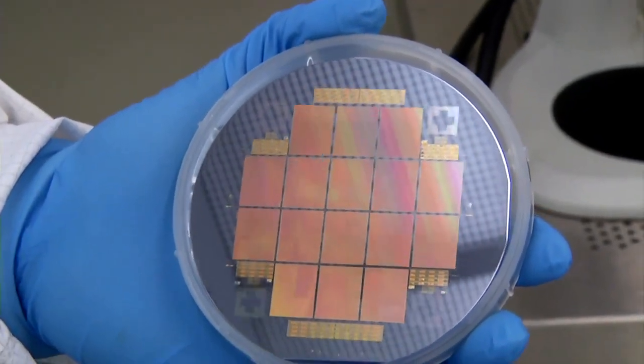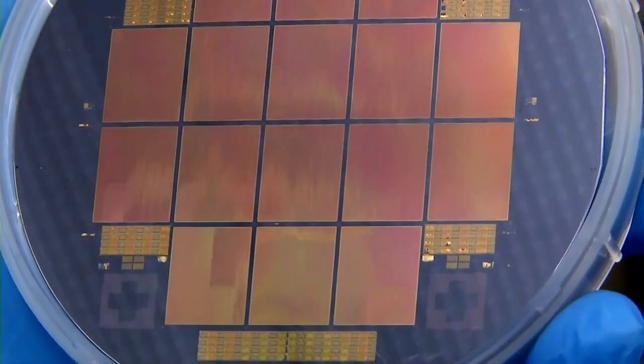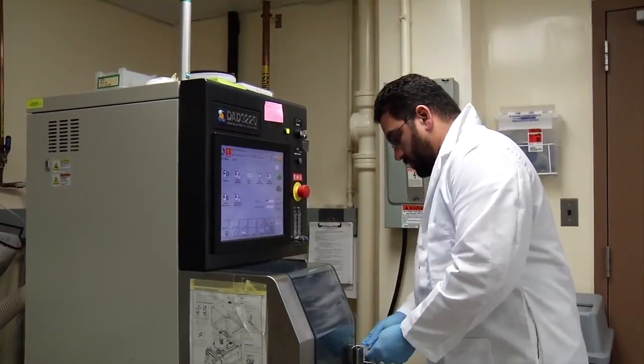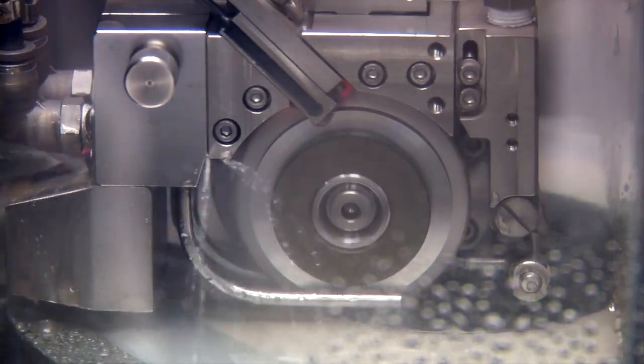Here is a gallium arsenide wafer with 16 QUIP arrays that has completed fabrication. The substrate is taken to our packaging lab, where it's diced into individual dies.